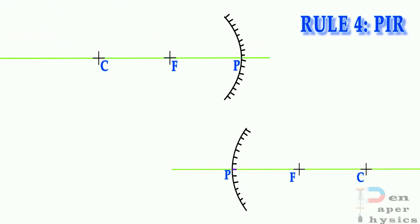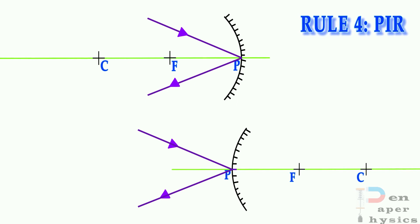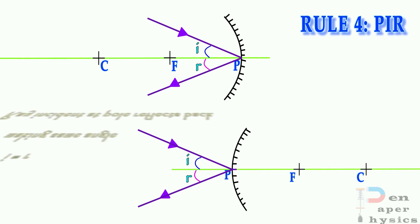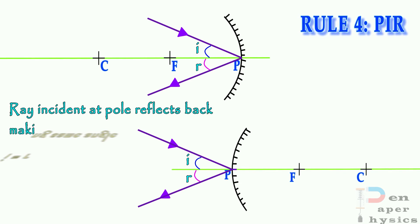The last rule is the PIR rule — P for pole, I for angle of incidence, and R for angle of reflection. A light ray incident at the pole reflects back making the same angle with the principal axis, meaning I equals R. However, for drawing any ray diagram we only need any two rules. Most of the cases we use the PF, FP, and CC rules. The PIR rule is not used that much.